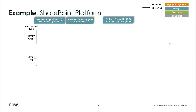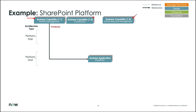The next example is SharePoint. Here we start with the notion of SharePoint both as a platform capability and as a facilitator of other capabilities in the organization, such as diverse capabilities in construction versus HR. The platform host is the SharePoint business application. Looking at product models, you can have different versions of SharePoint in different environments, and depending on how you deploy SharePoint, you may have multiples.